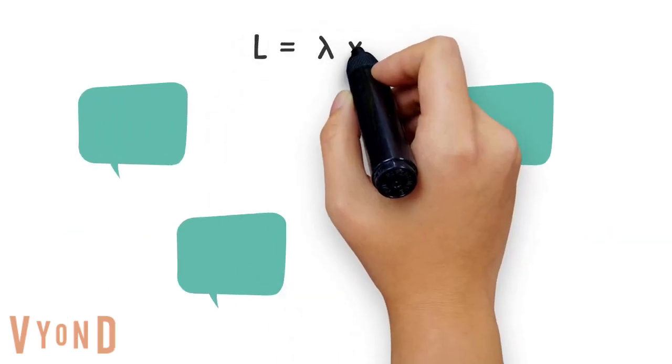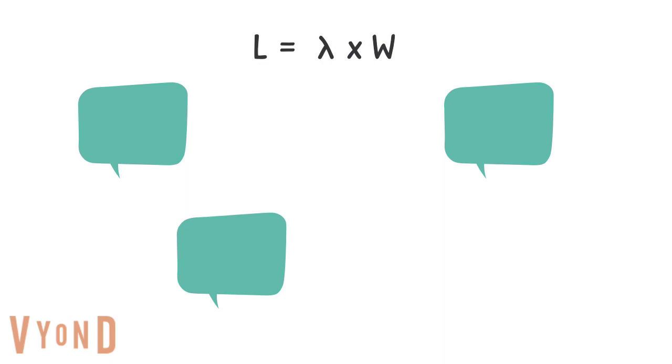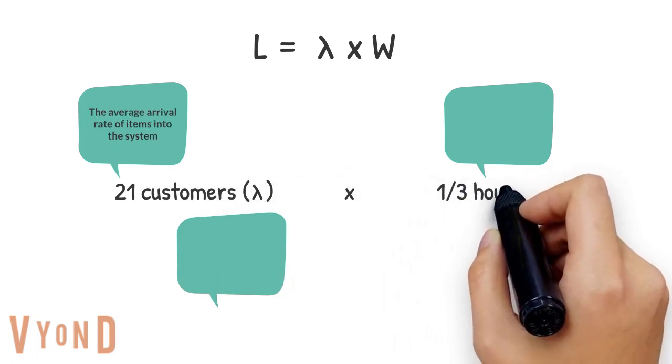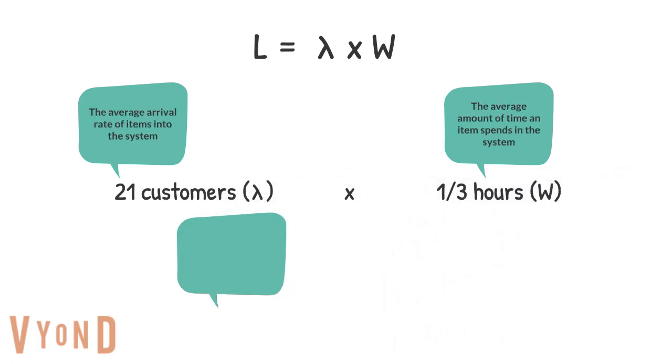By the given information, Matthew can find the average number of customers queuing in his restaurant by applying Little's Law, L equals lambda times W. It shows that, on average, seven customers will be queuing in the restaurant. So he does not need to create more space in the restaurant to accommodate more queuing customers.